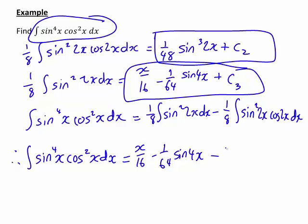Minus this result. So minus one on forty-eight sin cubed 2x. And on the end we'll have plus c3 minus c2, which is just another constant which I'll call c. So this would be our final result for the integral we started with.